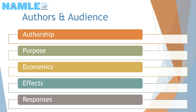Author and audience asks questions about: one, the author — so who made the media; two, the purpose — why was it made and what do they want me to do with this information; economics — who paid for the media; its effect — who is benefiting and who is being harmed by this post; and responses — how do I respond to media messages while considering how it makes me feel and how my emotions influence my interpretation of media messages.